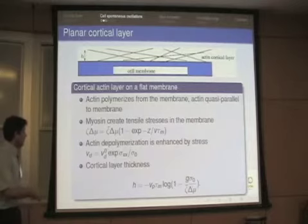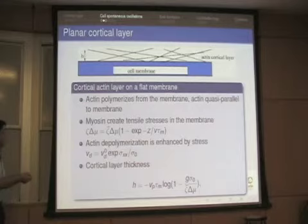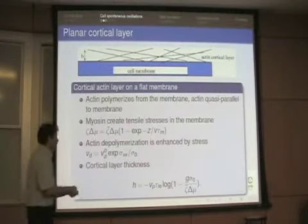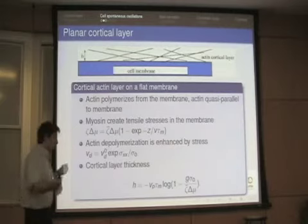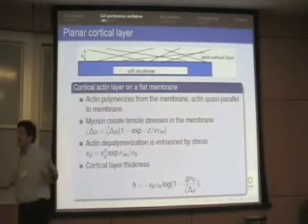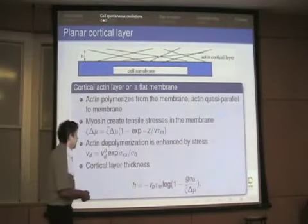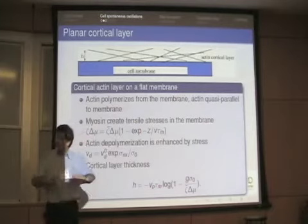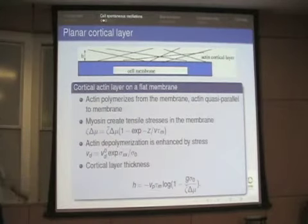The thickness is given by a formula involving Vp (the polymerization velocity) and tau-M (the time scale of the myosin attachment reaction), with a factor depending on activity. If myosins are very strongly active, the thickness is very small. If you decrease the activity, the thickness increases, and there is a finite value of activity where the thickness diverges — meaning the actin filaments fill the whole cell. That's our basic theory for the actin cortical layer.